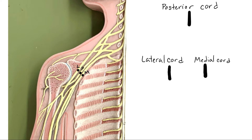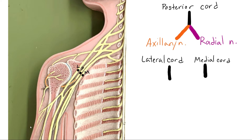Let's look at the posterior cord and the branches that come from it. The posterior cord splits into two components: the axillary nerve and the radial nerve. The axillary nerve innervates the deltoid muscle and the teres minor, and if we follow the posterior cord around on this model, you can see in orange where the axillary nerve is. The other split off the posterior cord is the radial nerve, which innervates all of the posterior muscles of the arm.